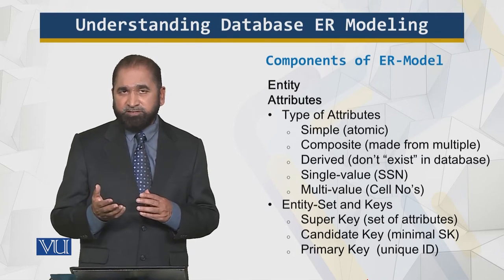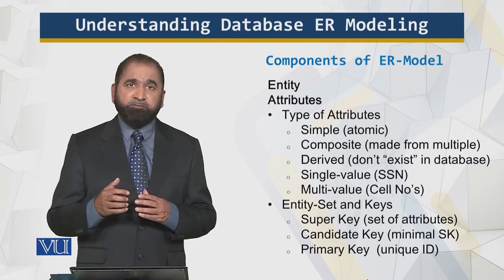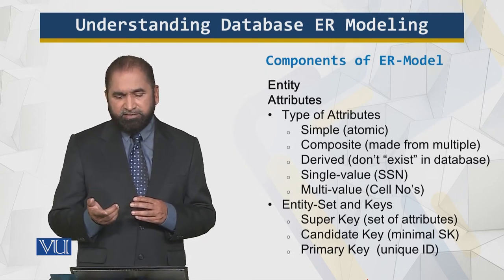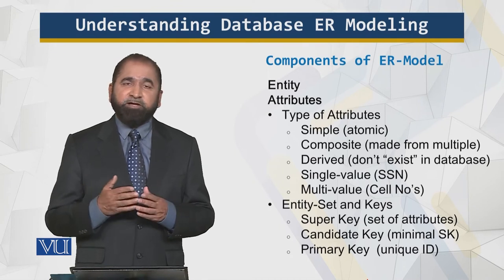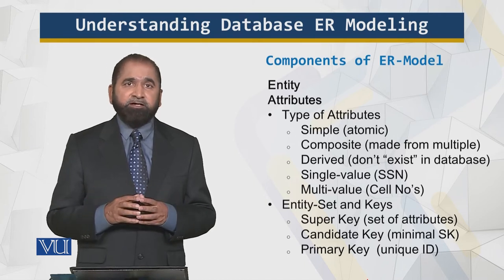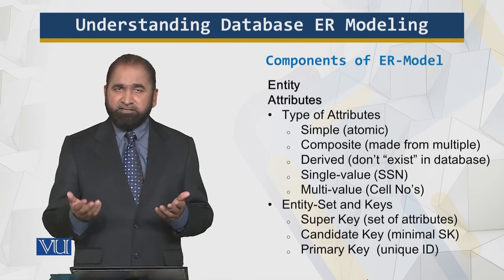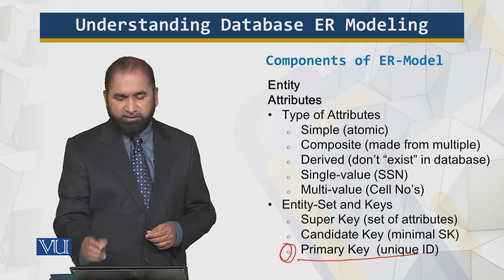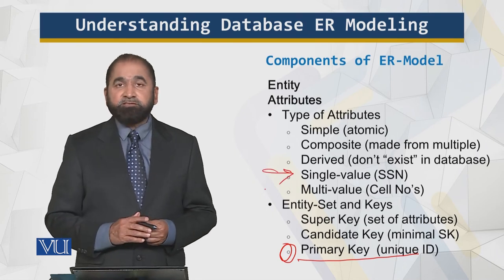Then there are multi-valued attributes. For example, cell numbers — a person can have multiple cell numbers, and a person can take multiple courses. Those are the multi-valued attributes. Then we have entity keys. We have the super key, which is a set of attributes, and then we have the primary key. A primary key is unique and it doesn't repeat itself — I can identify an entity based upon the primary key. There is also the candidate key. The primary key is most important here; it is used for identification purposes and is unique.